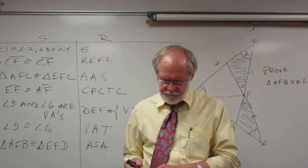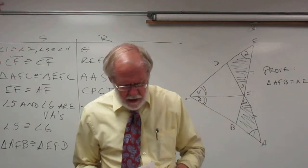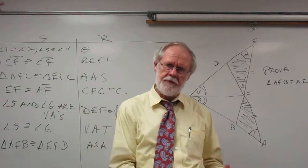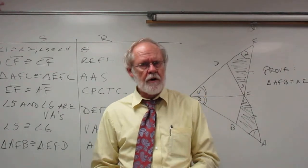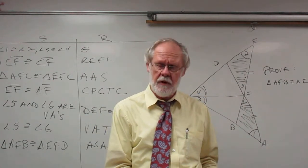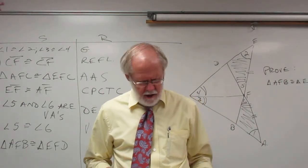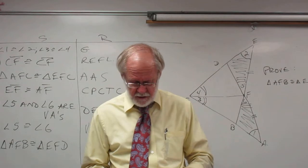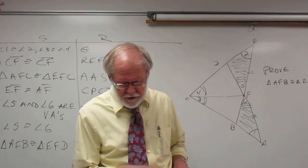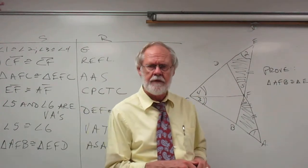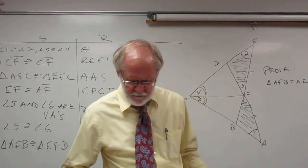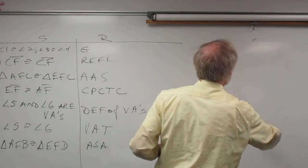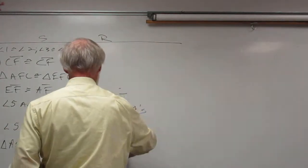That completes the first proof, where you prove two triangles congruent and extract their parts to prove two other triangles congruent. There is another type I want to look at — one involving parallel lines. Let me redraw and keep the two-column proof format.